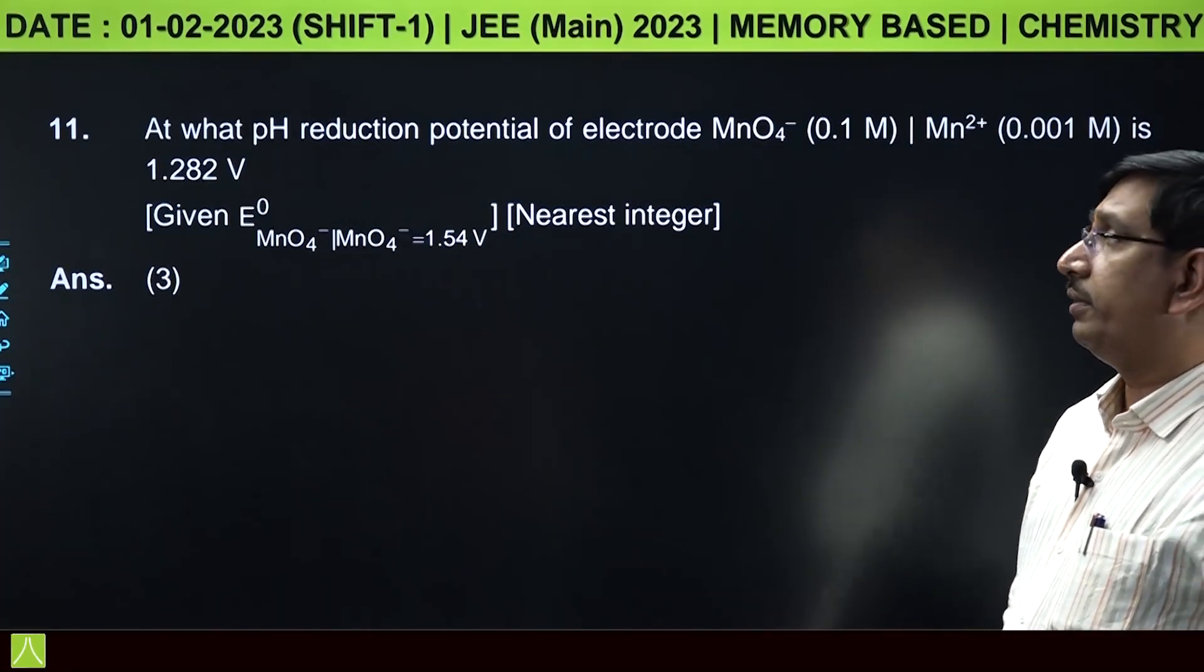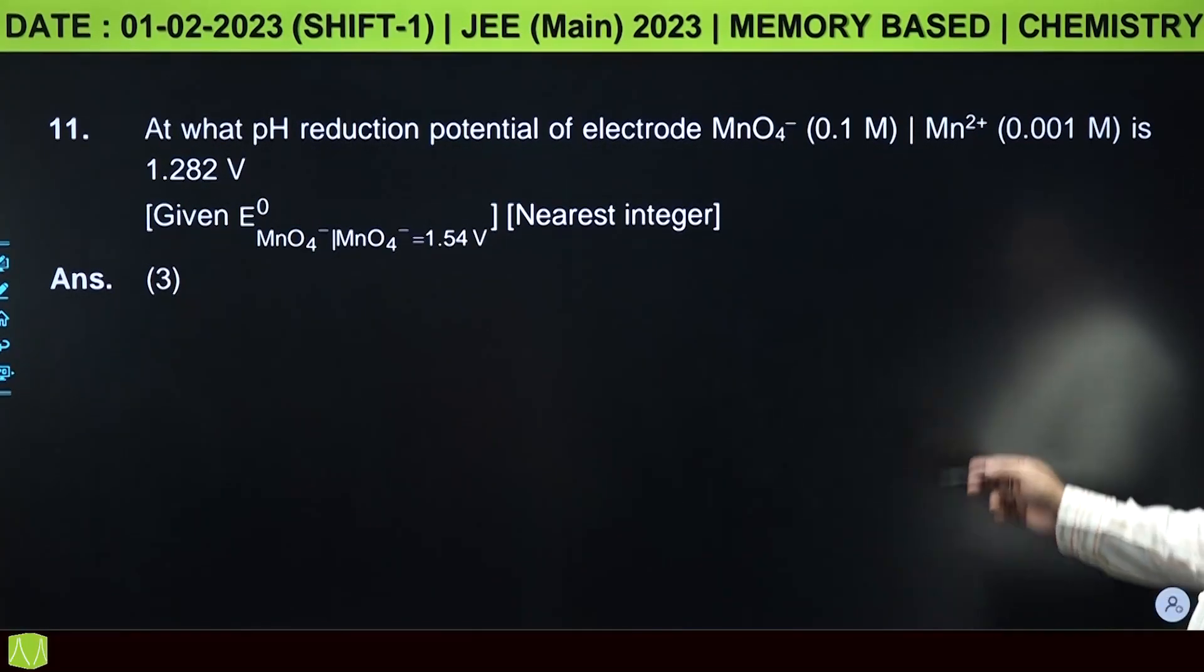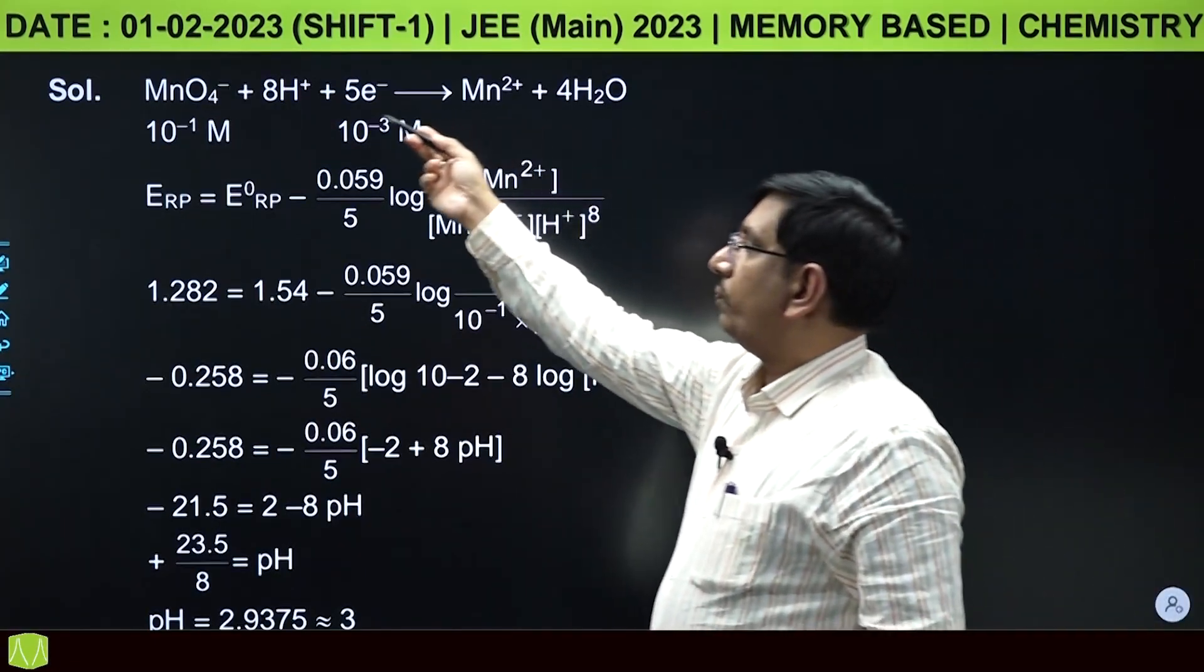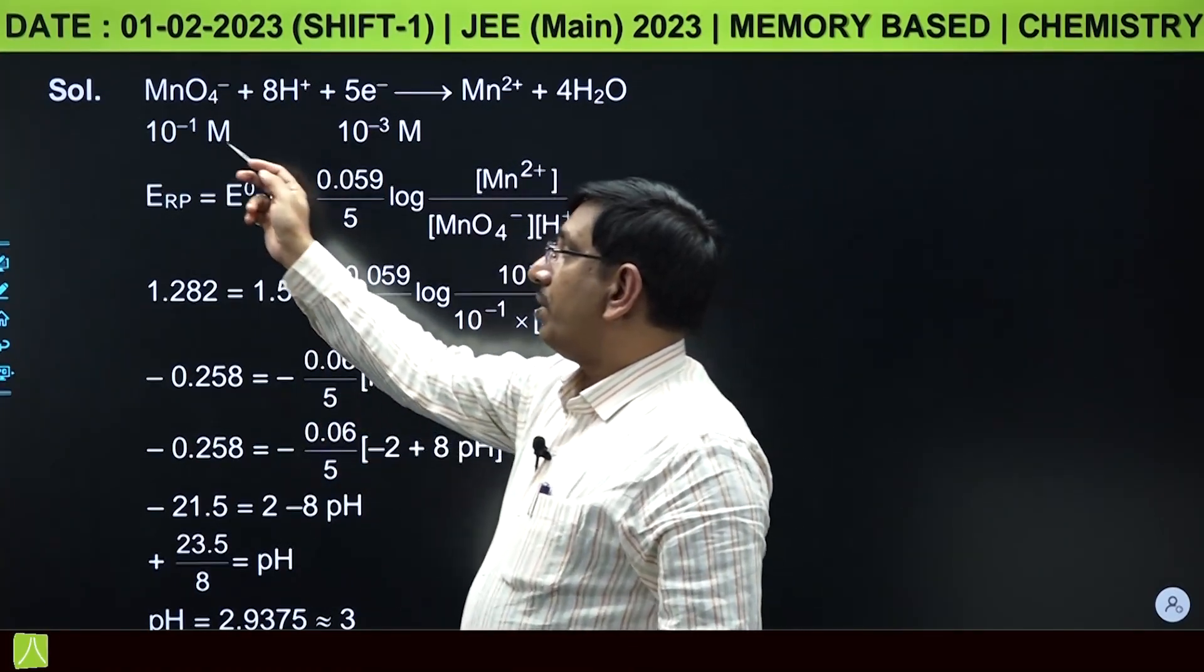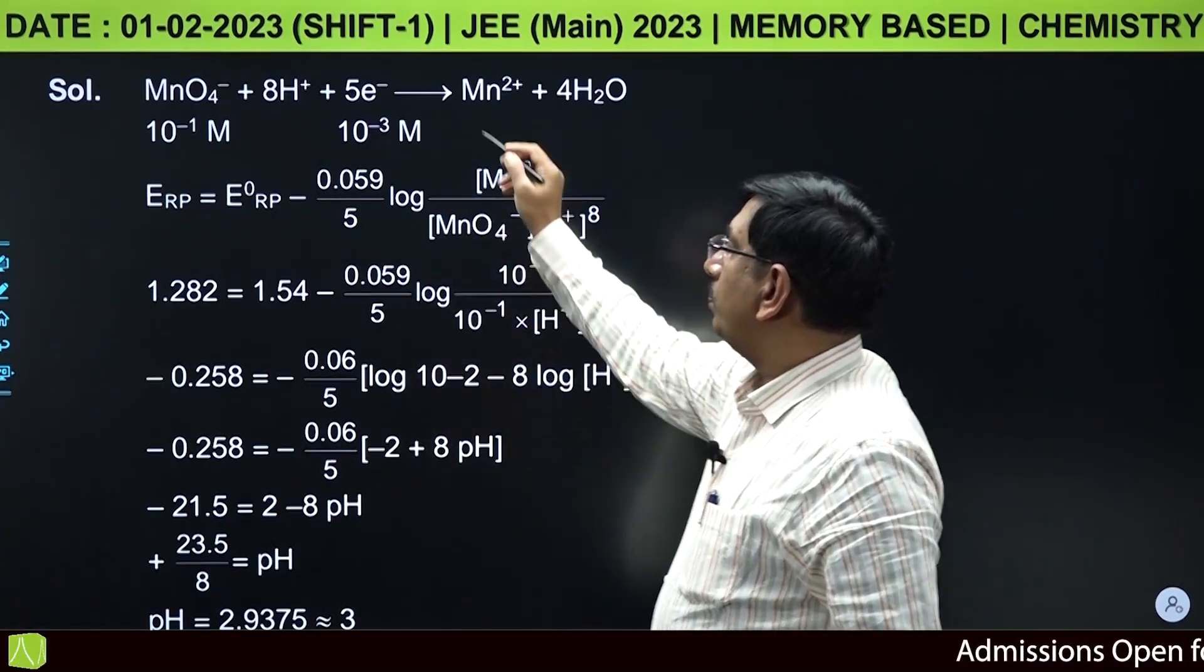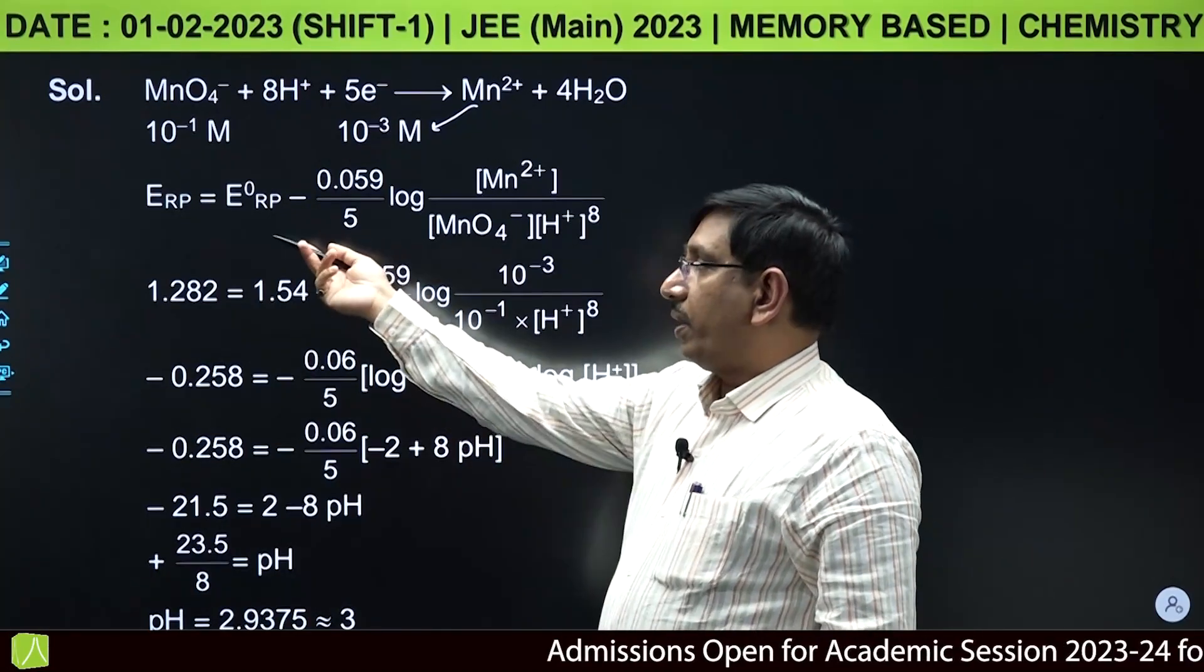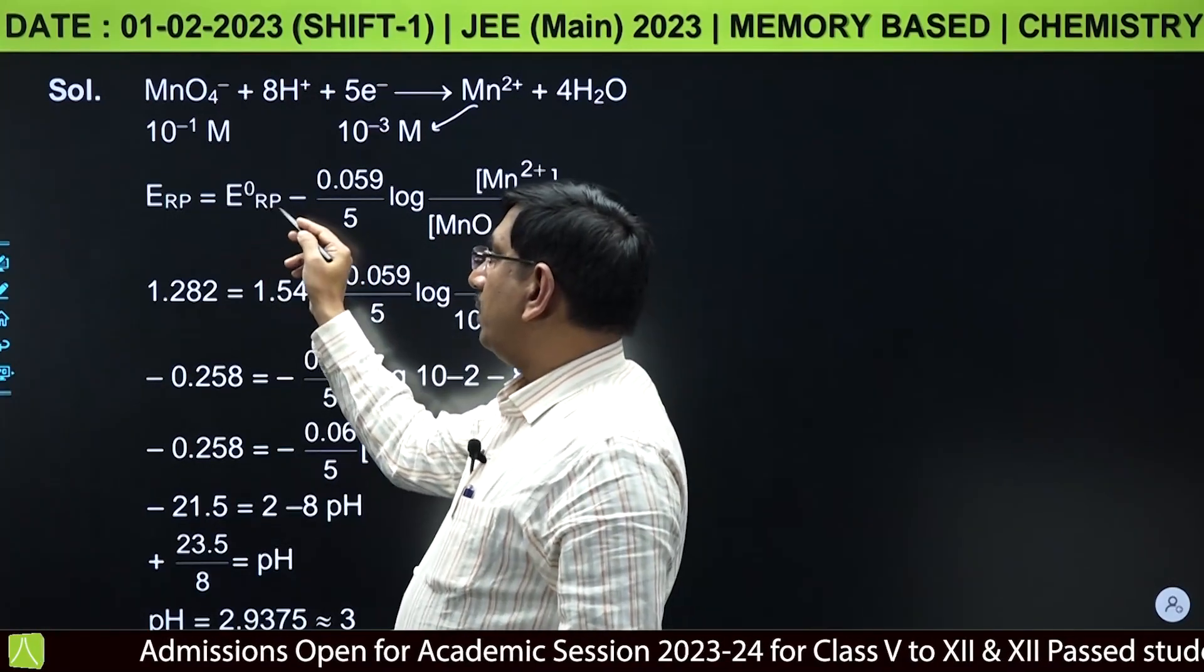From electrochemistry: at what pH, reduction potential of electrode MnO4- (0.1 molar) / Mn2+ (0.001 molar) is 1.282 volts? MnO4- in acidic medium converts to Mn2+.